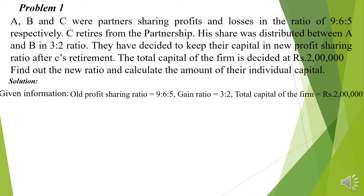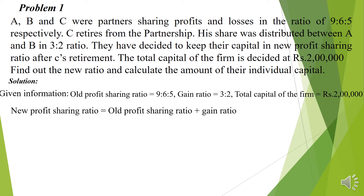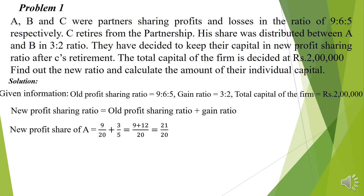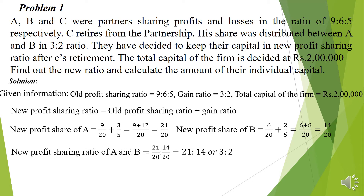We need to find the new profit sharing ratio and the amount of capital of each individual. The formula is: new profit sharing ratio = old profit sharing ratio + gain ratio. A's new share: 9/20 + 3/5 = 21/20. B's new share: 6/20 + 2/5 = 14/20. So the new profit sharing ratio is 21:14, which reduces to 3:2.